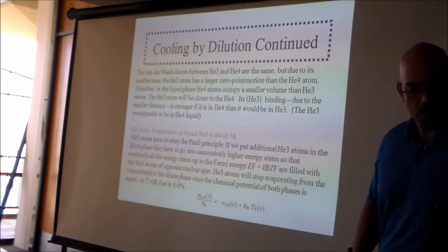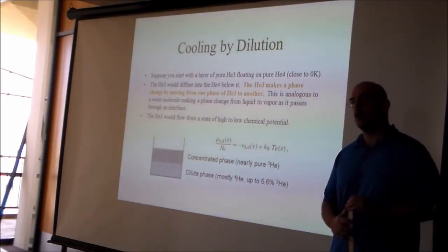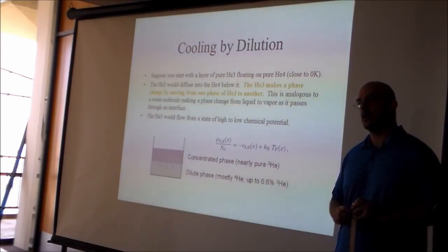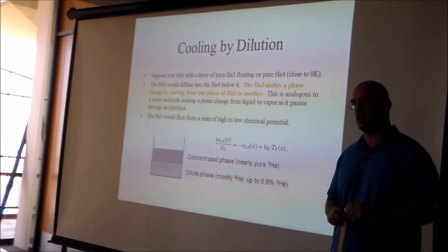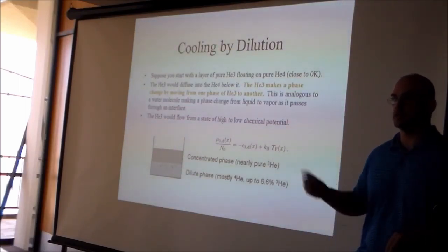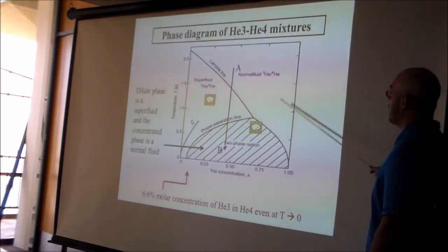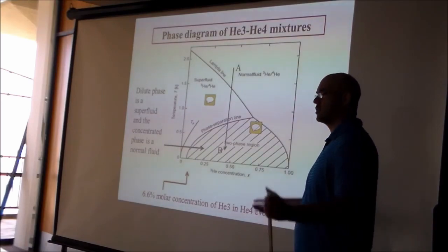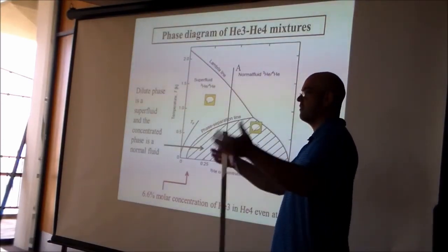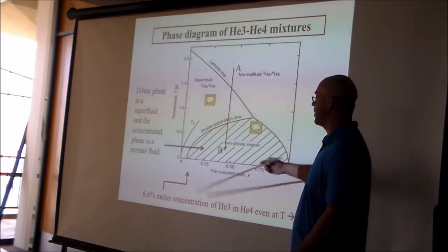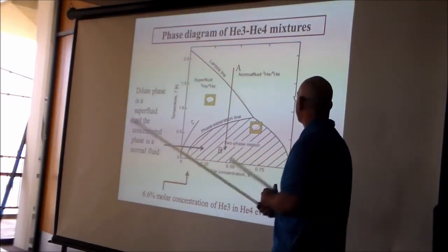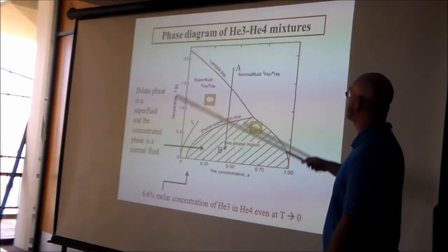Phase separation of the concentrated and dilute phases occurs when the mixture is cooled below a certain temperature. Here is the phase diagram for a mixture of helium-3 and helium-4, with the x-axis showing the fraction of helium-3. For example, a container with 25% helium-3 and 75% helium-4 is represented at x = 0.25.